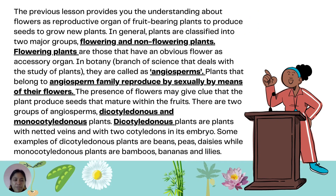The previous lesson provides you understanding about flowers as a reproductive organ of fruit-bearing plants that produce seeds to grow new plants. In general, plants are classified into two major groups: flowering and non-flowering plants. Flowering plants are those that have obvious flowers as accessory organs. In botany, the branch of science that deals with the study of plants, they are called angiosperms. There are two groups of angiosperms: the dicotyledonous and monocotyledonous plants.